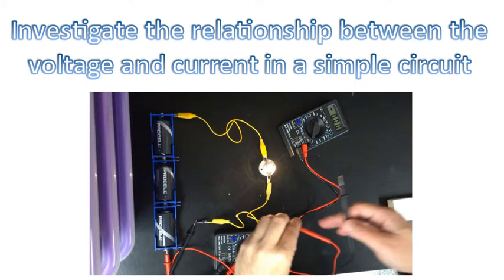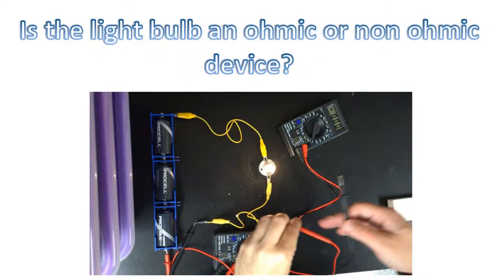Good morning! Today our goal is to investigate the relationship between the voltage and current in a simple circuit. In addition, we'll be asking the question: is the light bulb an ohmic or non-ohmic device?